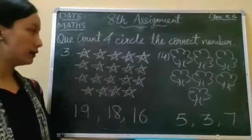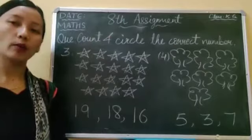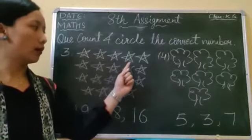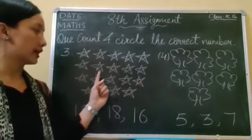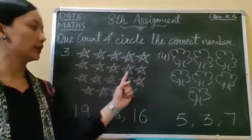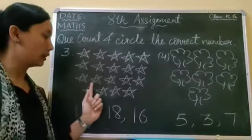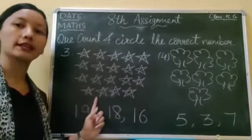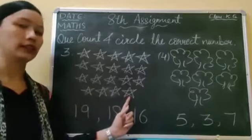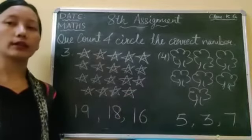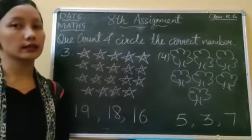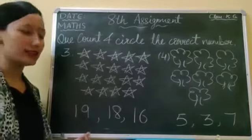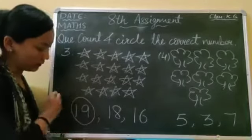Now next we have stars. Let's count how many stars are there. One, two, three, four, five, six, seven, eight, nine, ten, eleven, twelve, thirteen, fourteen, fifteen, sixteen, seventeen, eighteen, nineteen. How many stars are there? There are nineteen stars. Is this number nineteen? Yes, this is nineteen. Circle it like this.